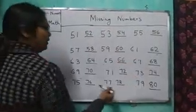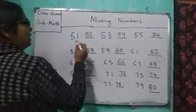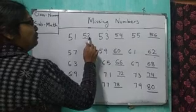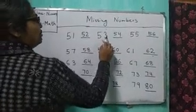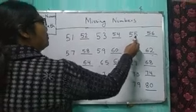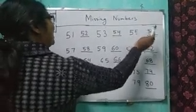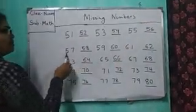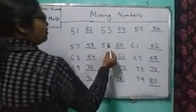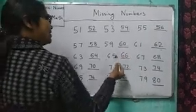Again, I am going to repeat. 51, 52, 53, 54, 55, then here 56, 57, then 58, 59, 60.